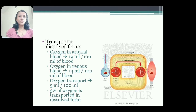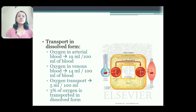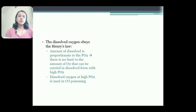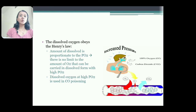Transport in dissolved form: oxygen in arterial blood is 19 ml per 100 ml of blood, and oxygen in venous blood is 14 ml per 100 ml of blood. So 5 ml of oxygen is transported per 100 ml of blood, and 3% of oxygen is transported in dissolved form. Dissolved form of oxygen obeys Henry's law — the amount of dissolved gas is proportional to its partial pressure. As partial pressure increases, amount of dissolved form also increases, and there is no limit to the amount oxygen can be carried in dissolved form.